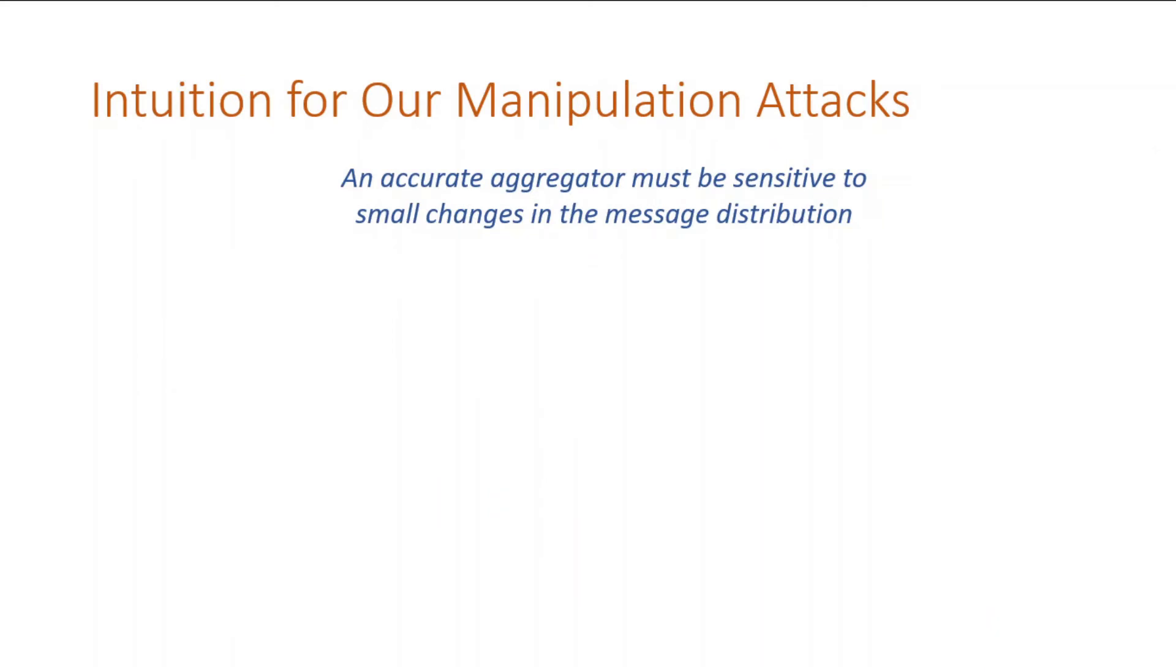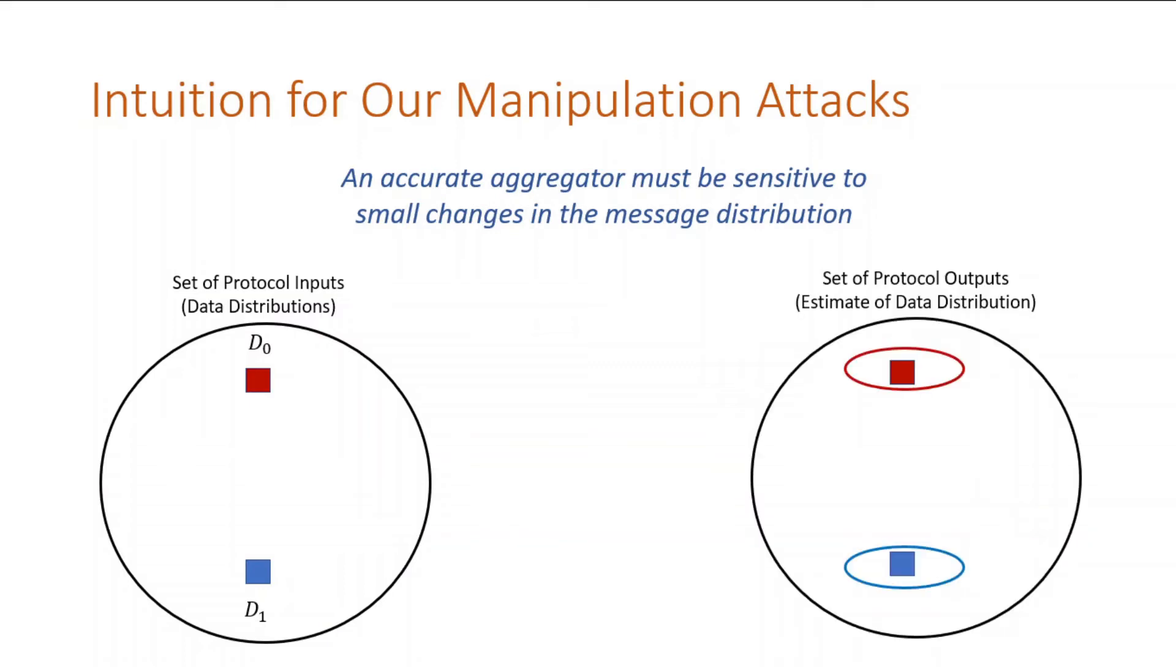The core idea of our attack is the following observation: an accurate aggregator must be sensitive to small changes in the message distribution. So to set up, we'll draw the set of data distributions as a circle. Now suppose there are two distributions on data that are far apart, for example, uniform over some set, or far from uniform. Ideally, the protocol is good at estimating distributions, so its estimates should live in these two regions close to the true distributions.